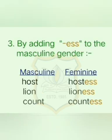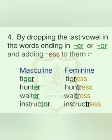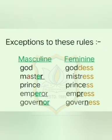Number 3: by adding ESS to the masculine gender — H-O-S-T, host becomes H-O-S-T-E-S-S, hostess. Number 4: by dropping the last vowel in words ending in ER or OR and adding ESS — T-I-G-E-R, tiger becomes T-I-G-R-E-S-S, tigress. There are exceptions — G-O-D, god becomes G-O-D-D-E-S-S, goddess, and a few more examples.